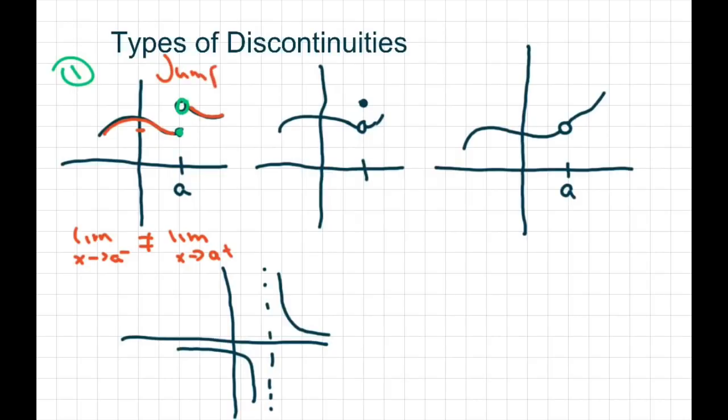This one right here is called a point discontinuity. It has a hole in it because the function has a value that's off the curve. So if the function value is four, it's not on the curve. In this case, the limit as x approaches a of f of x would be two, which does not equal f of a because it would be undefined there.